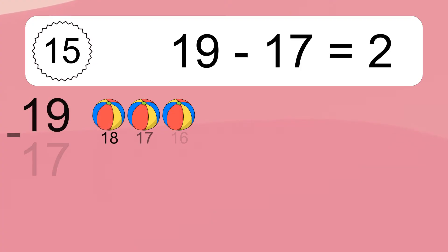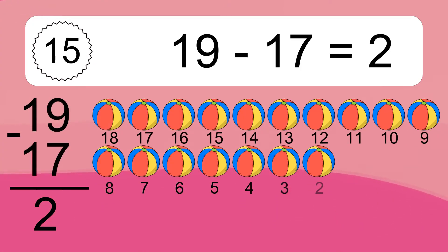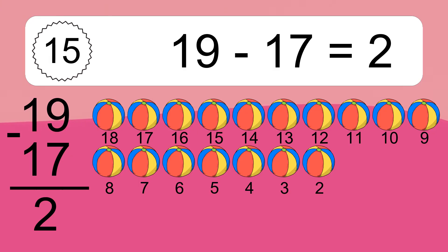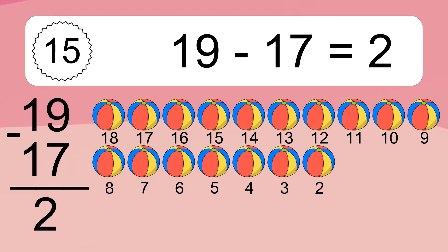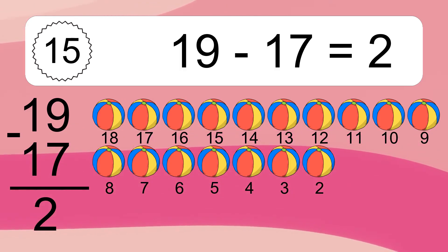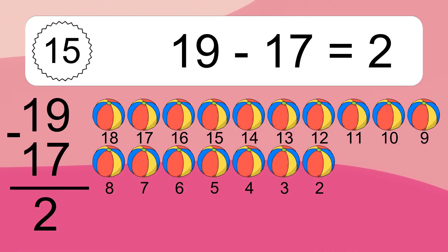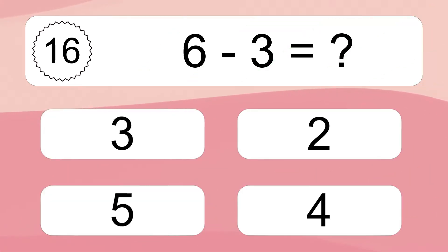19 minus 17 equals what? 19 minus 17 equals 2. Let's count it: 18, 17, 16, 15, 14, 13, 12, 11, 10, 9, 8, 7, 6, 5, 4, 3, 2.